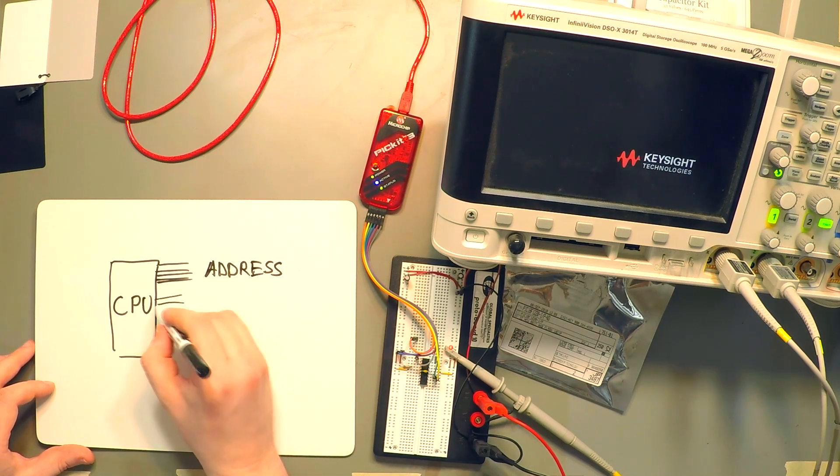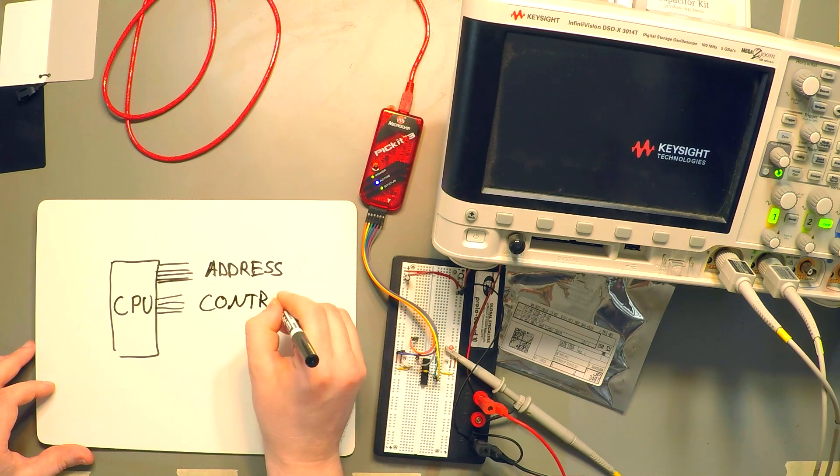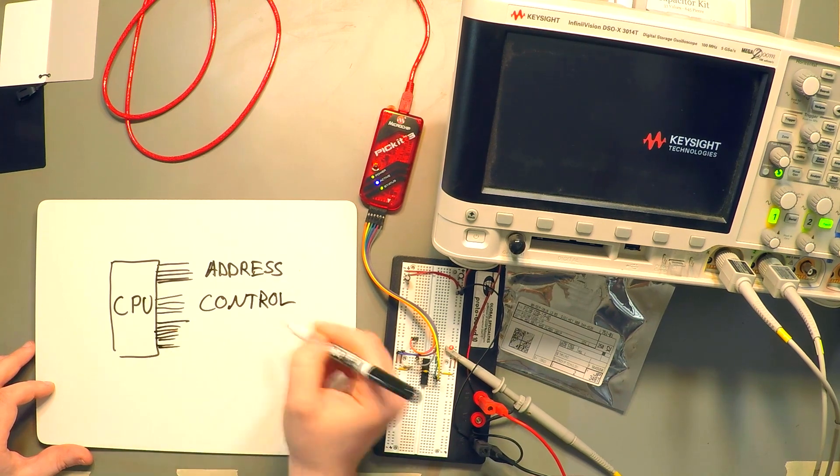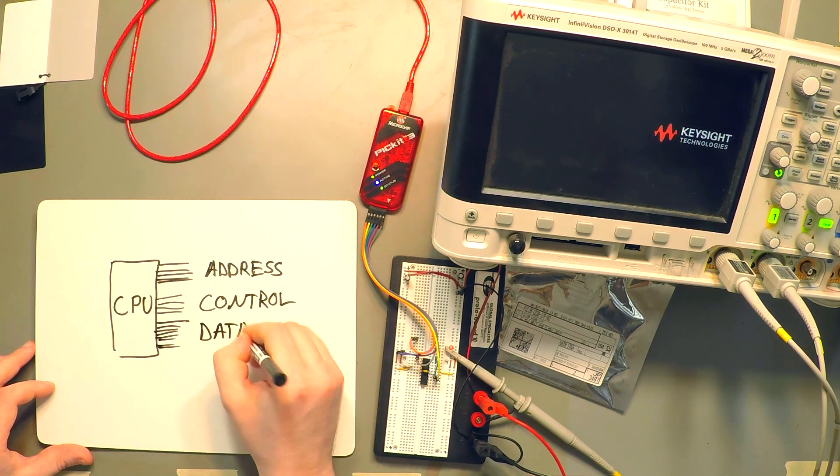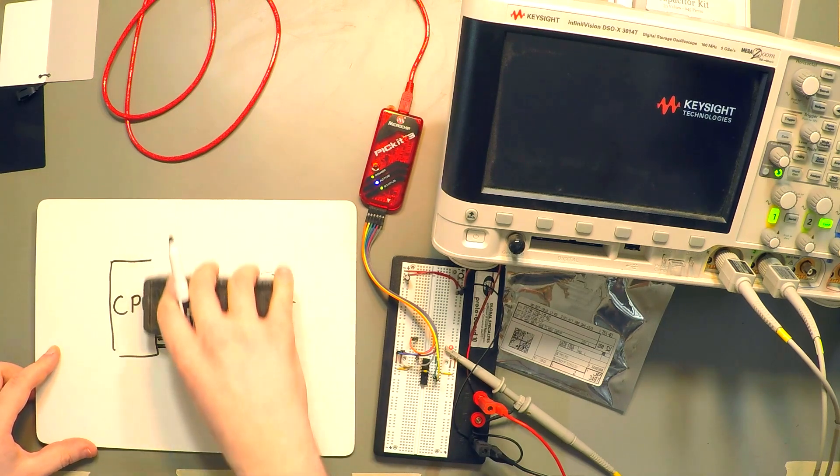And there's going to be some signals which will be used to control things. And then you'll have a bunch of signal lines which will form a data bus which is going to take data in and out of the CPU. Now let's simplify this diagram just a little bit.